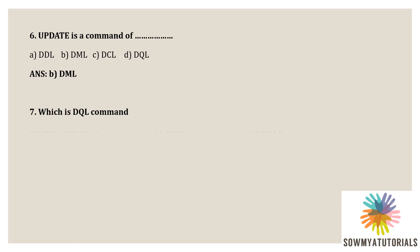Next question: which is a DQL command among these options? Option A, drop; option B, delete; option C, select; option D, alter. Drop is a DDL command, delete is a DML command, select is a DQL command, and alter is a DDL command. The correct option is option C, select. Select is a DQL — data query language — command.